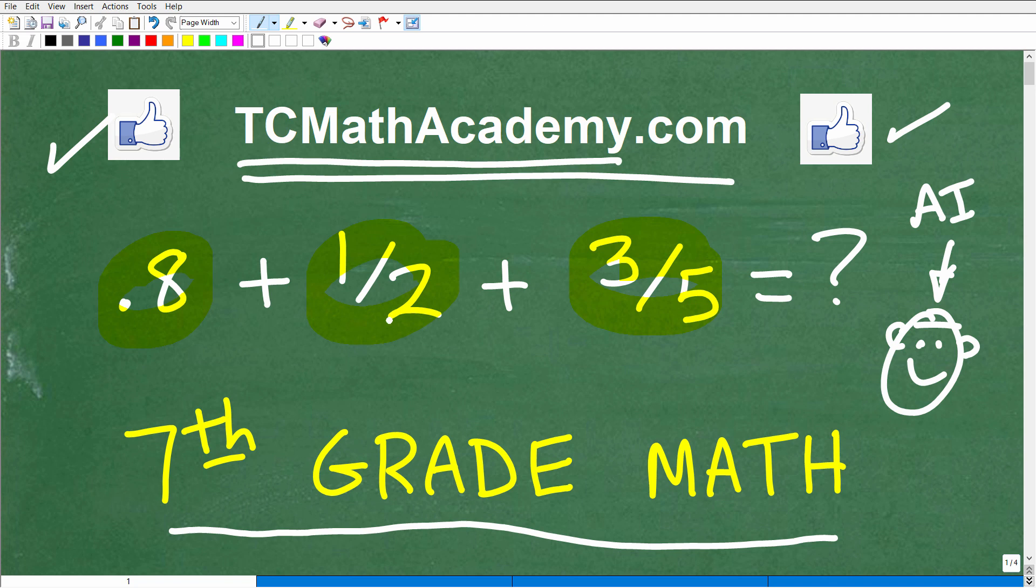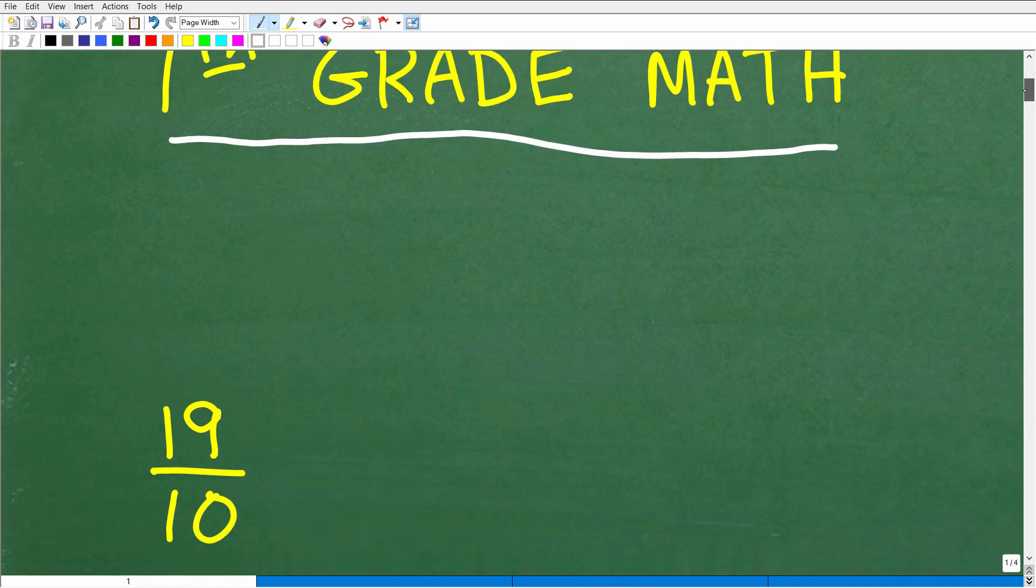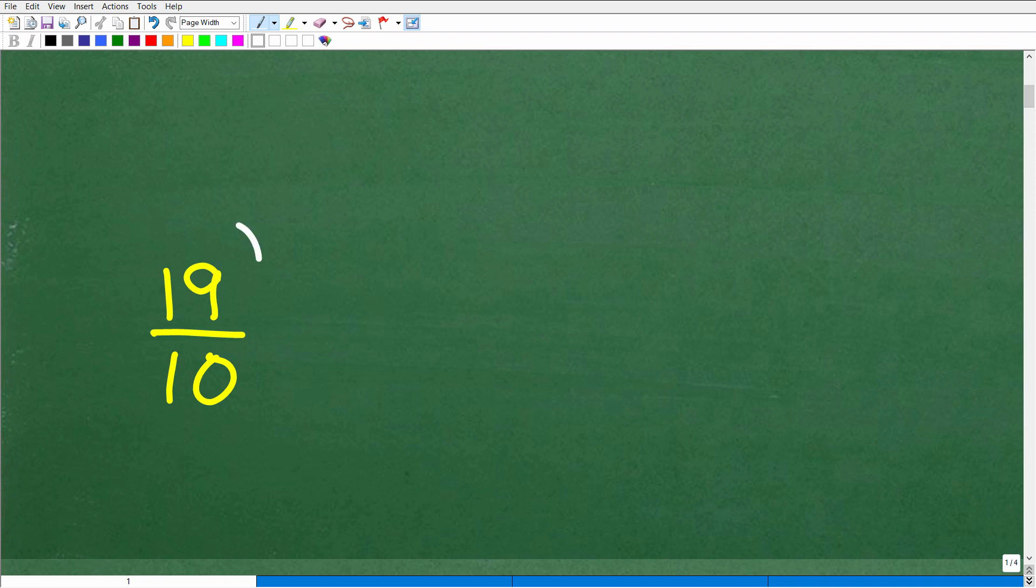Okay, so we have 0.8 plus 1 half plus 3 fifths. So we have a decimal and a couple fractions. So obviously, we're going to need to know something about decimals and fractions and how to convert maybe from a decimal to a fraction or a fraction to a decimal. And again, you don't want to do this problem without a calculator. But let's go ahead and take a look at the answer right now. The answer is 19 tenths. Okay, so how many of you got that right? Well, if you didn't get that right, don't be discouraged. This is not that difficult.